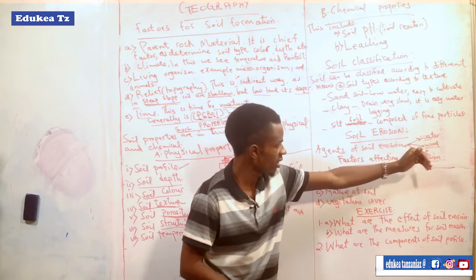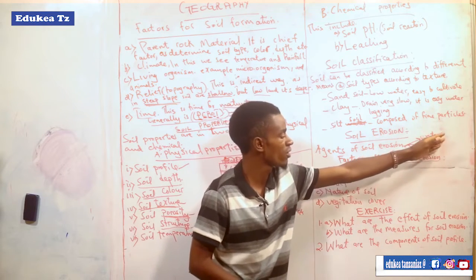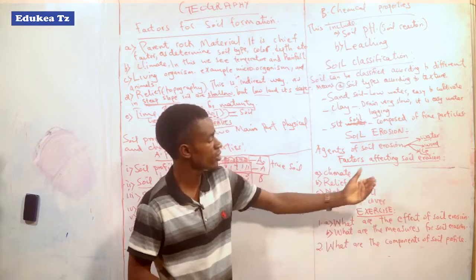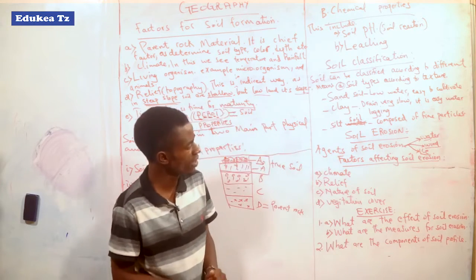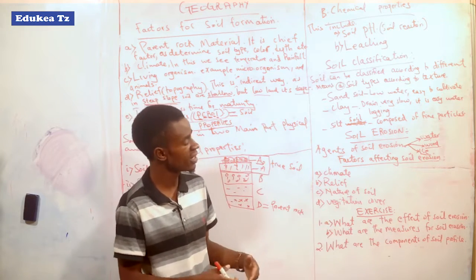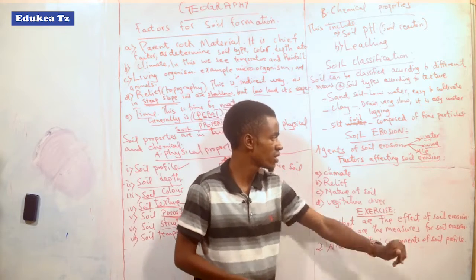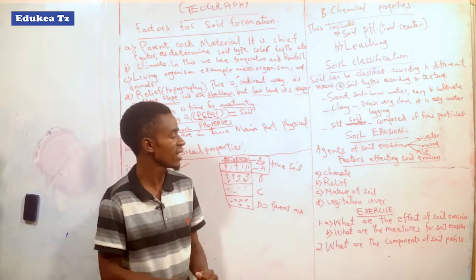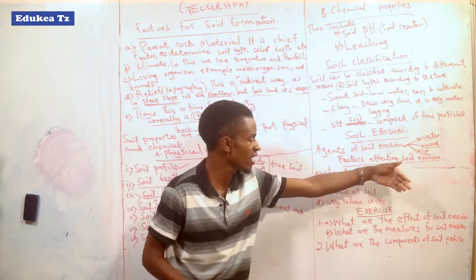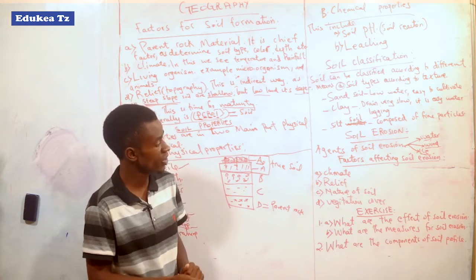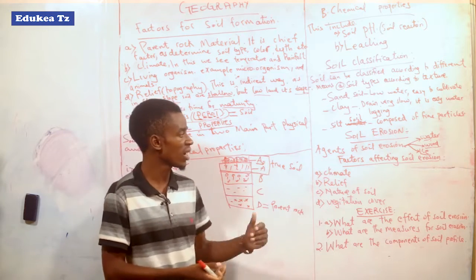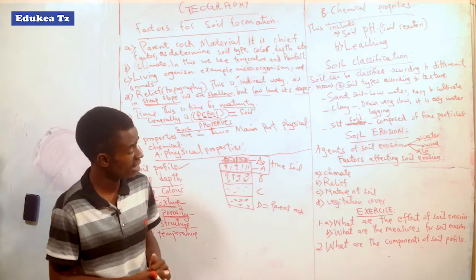When erosion takes place through these agents, different features are formed. Running water, for example rivers, can form features like flood plains and plunge pools. Wind, when it blows material from one point to another, forms features especially in the desert. Ice also forms different features — moving ice erodes and forms features especially in countries that are vulnerable to ice formation.